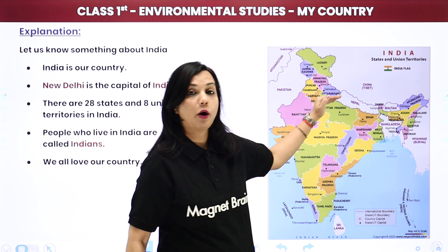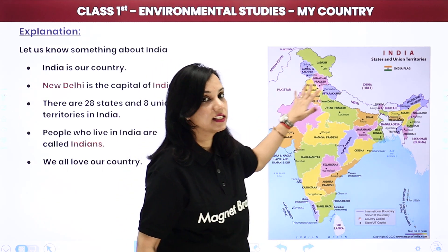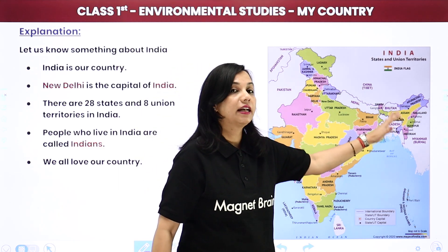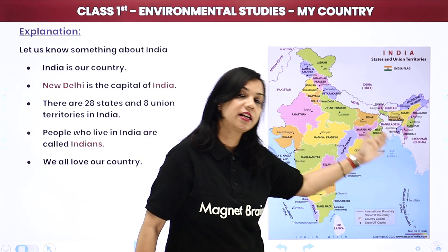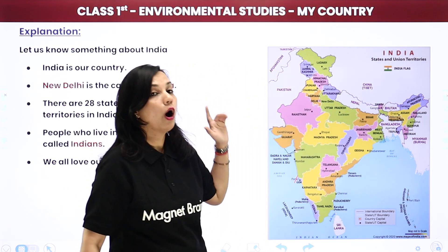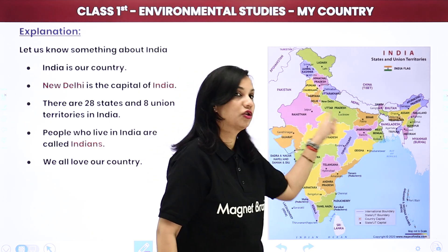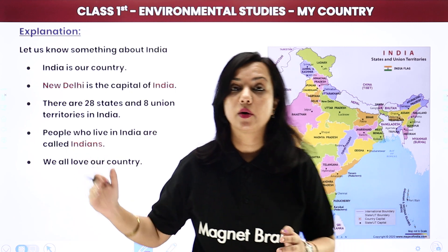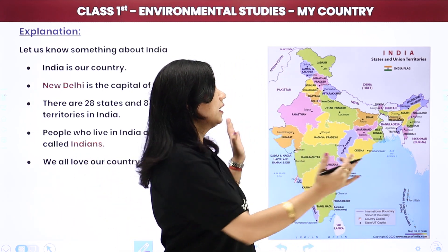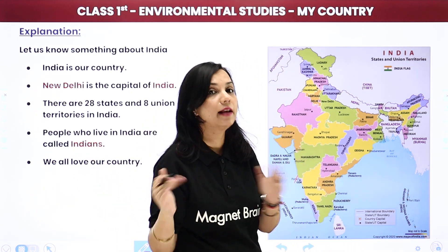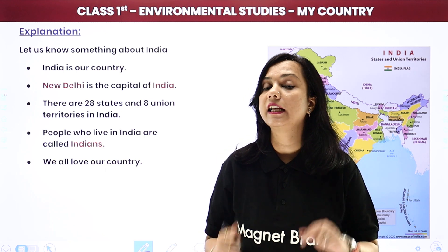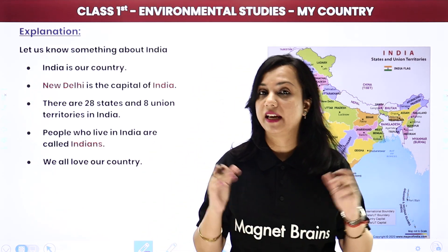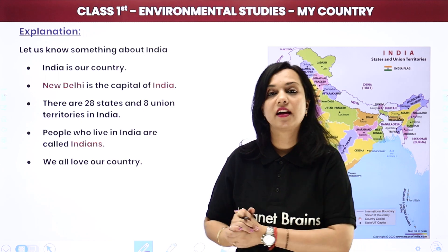You can see - top mein dekho, top ke northern states hongi, south mein southern states hongi, eastern side ke eastern states hongi, western ke western, aur aata hai beech ka central part. Jaisi jaisi aap upar ki classes mein jaoge, aap ye saari cheeze bahut hi detail mein samjhoge. Hal-filhal ke liye aapko yeh jaana hai ki haamari country ka naam hai India.